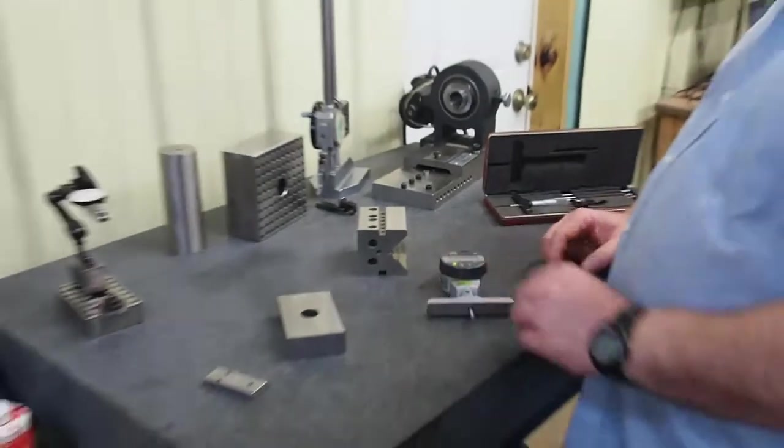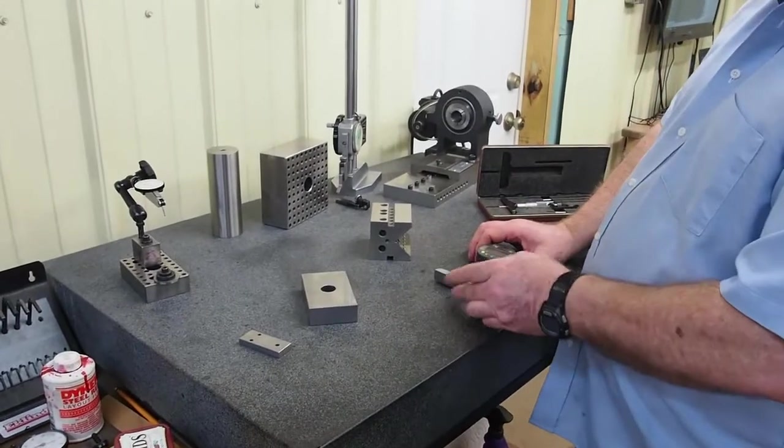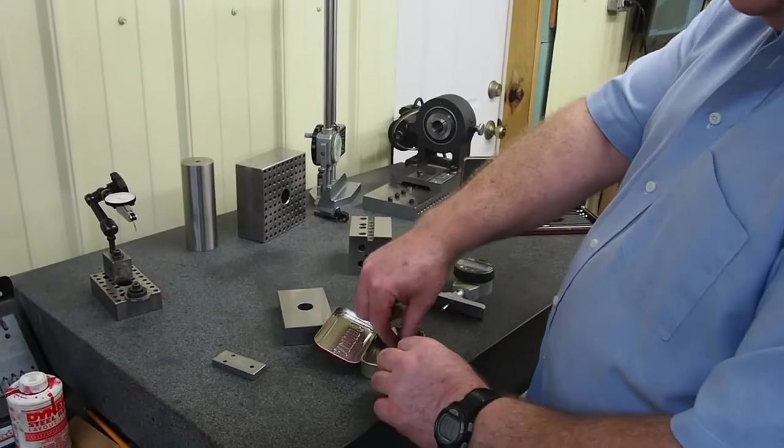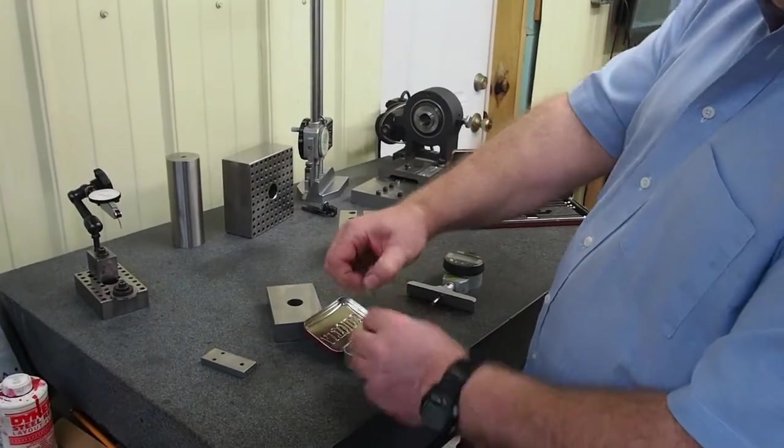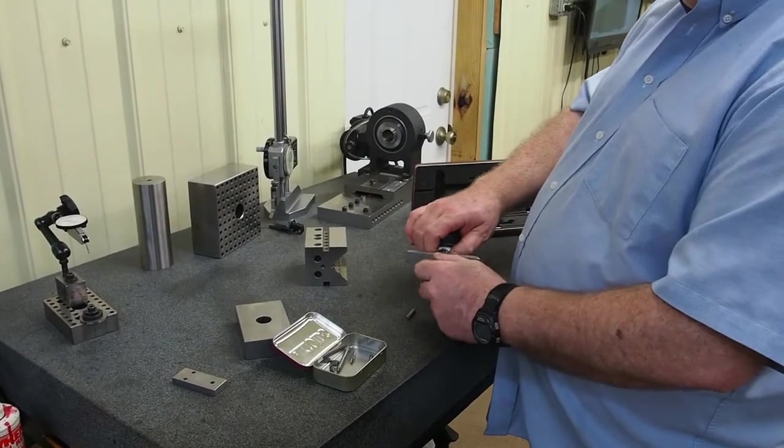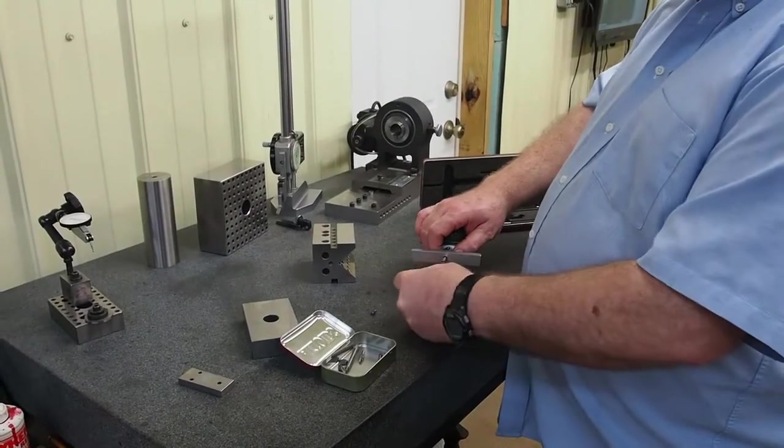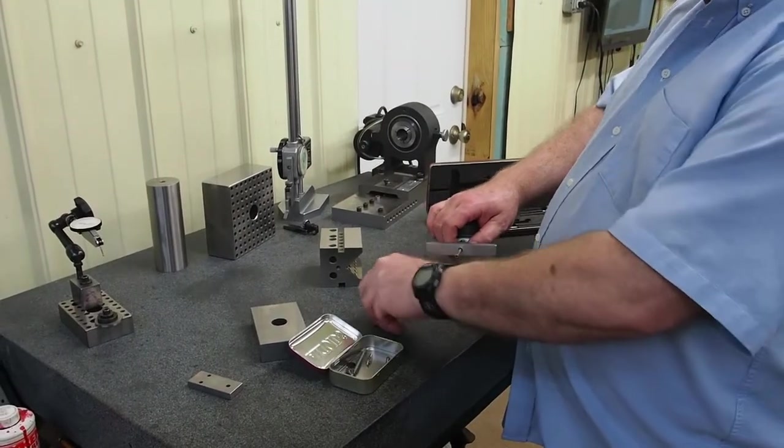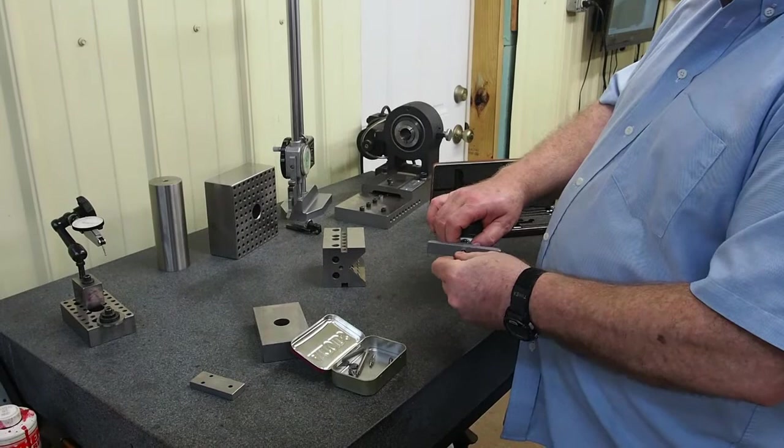What do you do when you need to have something that's further than the one-inch travel? I don't have all the rods, but you can buy a set like this. You can unscrew the tip here, screw this in here, screw that tip in.